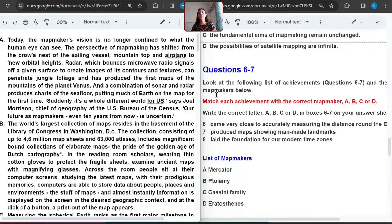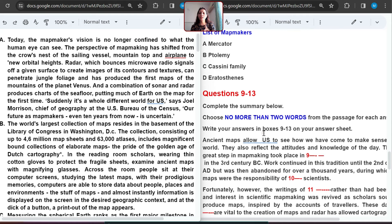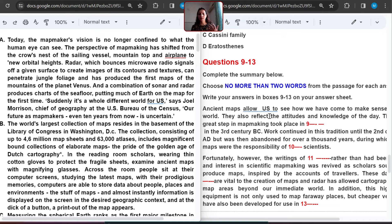So first type of questions we have, we can easily see multiple choice questions. One question is given and four options are there. So we have to choose one option. And the next one is, look at the following achievements, list of achievements and mapmakers. So indirectly, if you look at this list of mapmakers, it means list of people question. We have to match these people with these sentences. Last one is complete the summary no more than two words. Here also they are talking about ancient map.